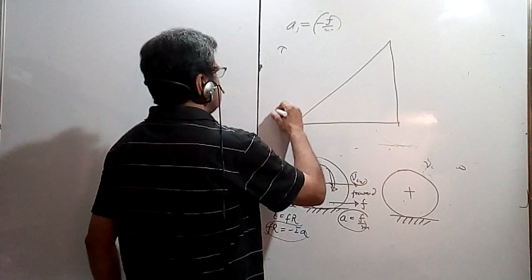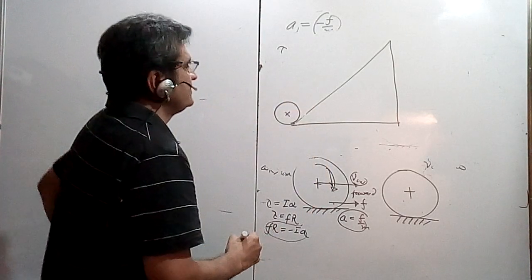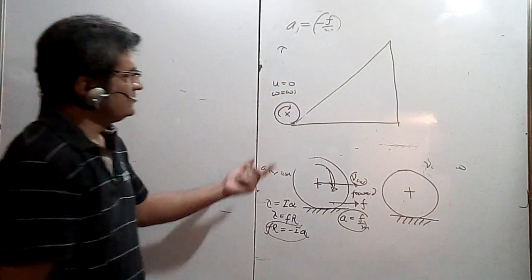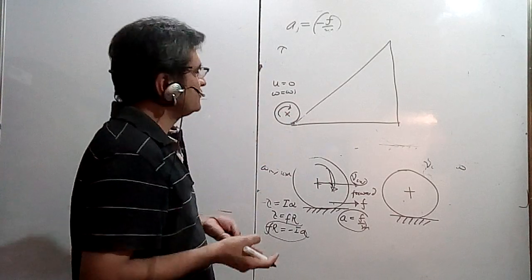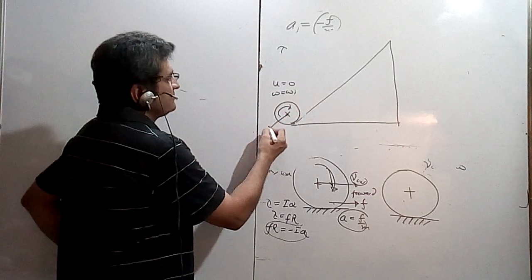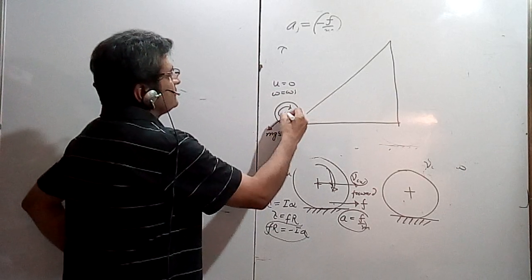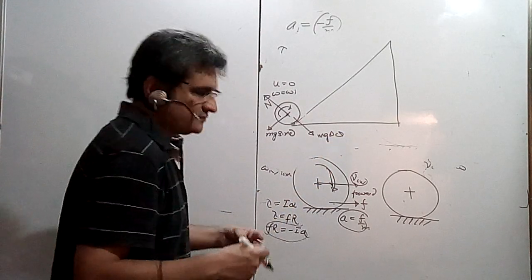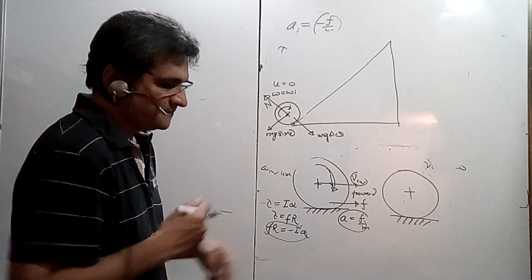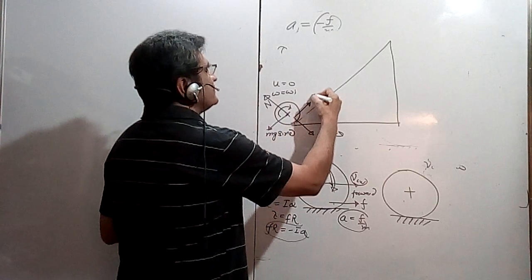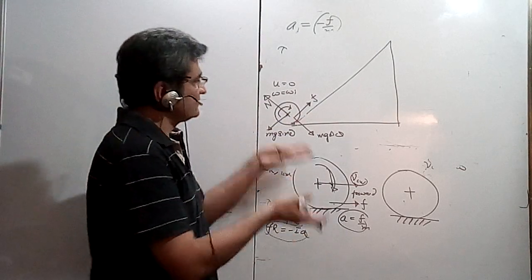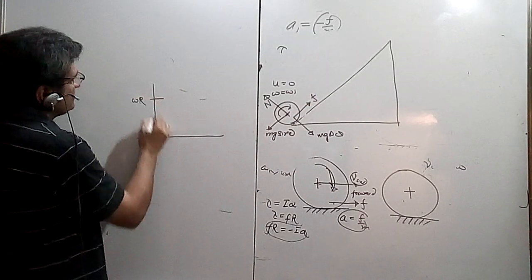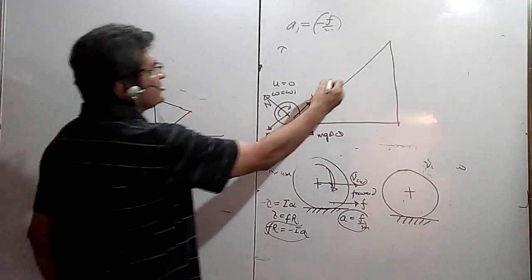Now let's take the inclined plane case. I put a body on the inclined plane and give it an initial omega, with initial velocity u equal to zero. It has to move upwards. The gravity pulls it back as mg·sin(theta), the normal is mg·cos(theta). Since omega is greater than u, it is slipping — like backward skidding — so the friction force acts upward, moving it up and providing acceleration while retarding omega. I want to reach a point where pure rolling starts.